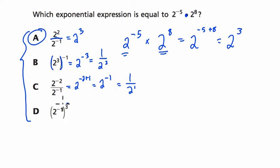And then D, again multiply those two exponents, it's 2 to the negative 3, so B and D are equal to each other, and that's 1 over 2 to the 3rd.